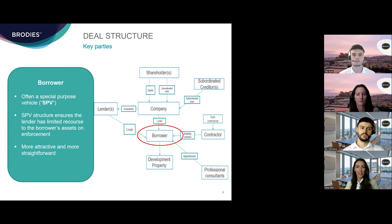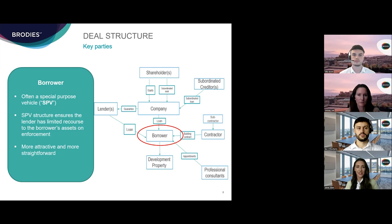From the borrower's perspective, borrowing via an SPV will ensure that the lender has limited recourse to its assets on enforcement. This is in comparison to a situation where the borrower is not an SPV and has interests in a number of other assets which do not relate to the property being financed or secured. From the lender's perspective, using an SPV borrower gives clarity about the financial viability of the transaction — the SPV is a new business with no financial baggage, no debts or liabilities, and no outstanding legal cases.